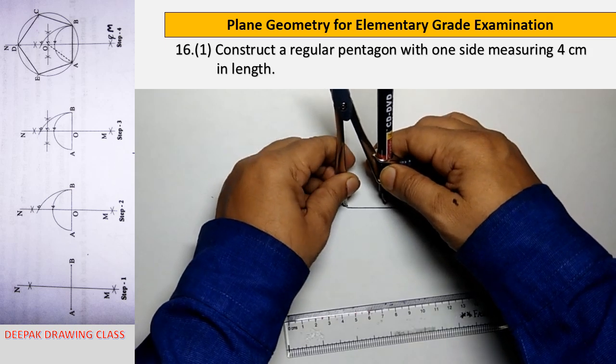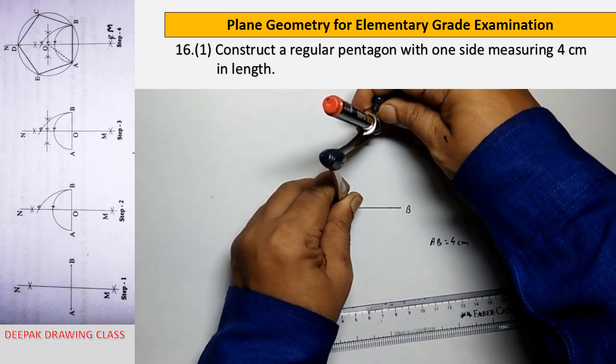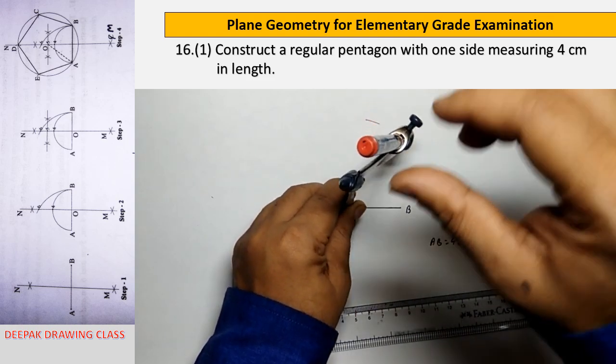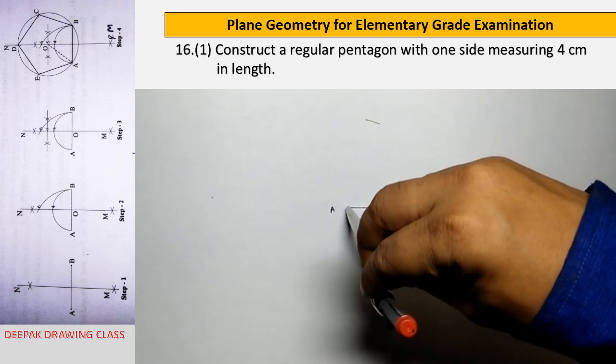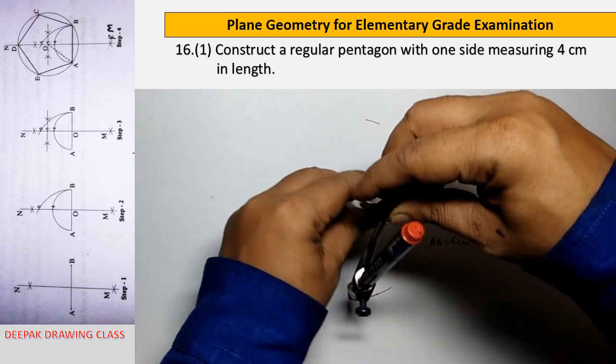First of all, draw line AB of 4 centimeters long. Then draw the perpendicular bisector MN of line AB.